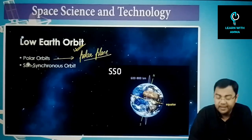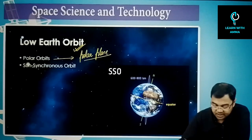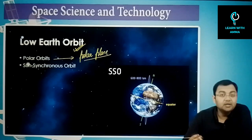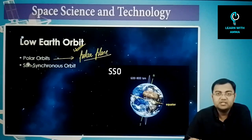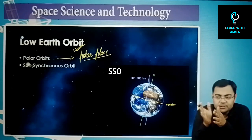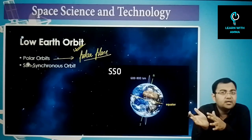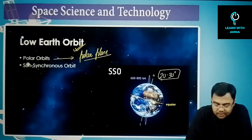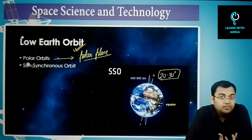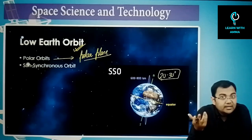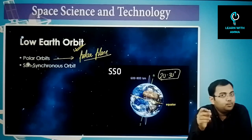The polar plane refers to the plane aligned with Earth's north and south poles. A particular orbit in this plane may be exactly aligned with the magnetic poles or slightly inclined — for example, 20 or 30 degrees. Any orbit in that range will be called a polar orbit.